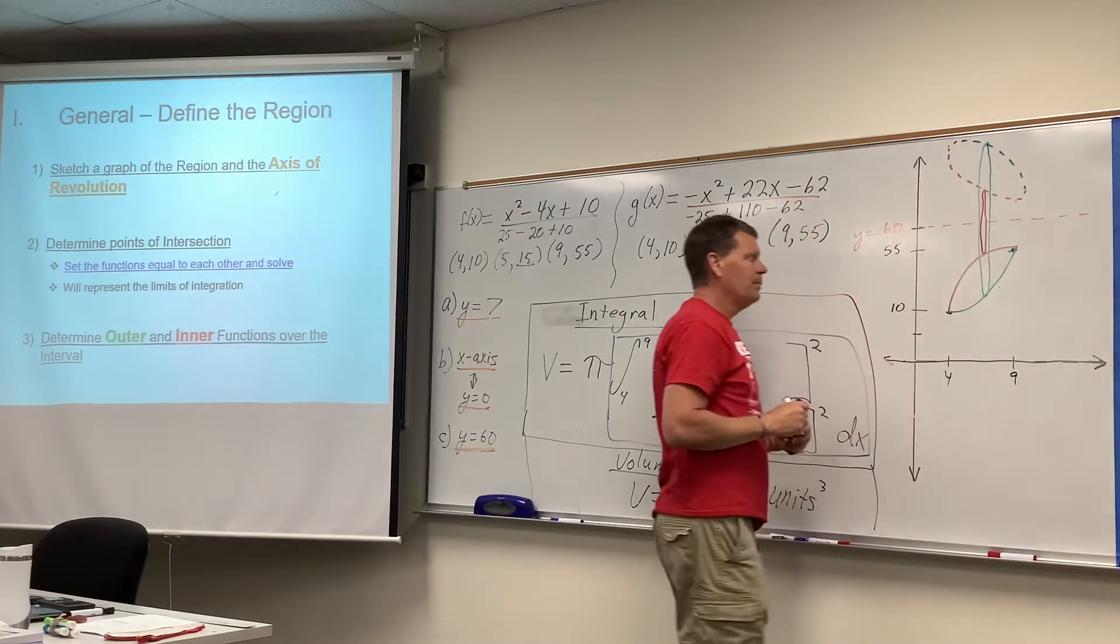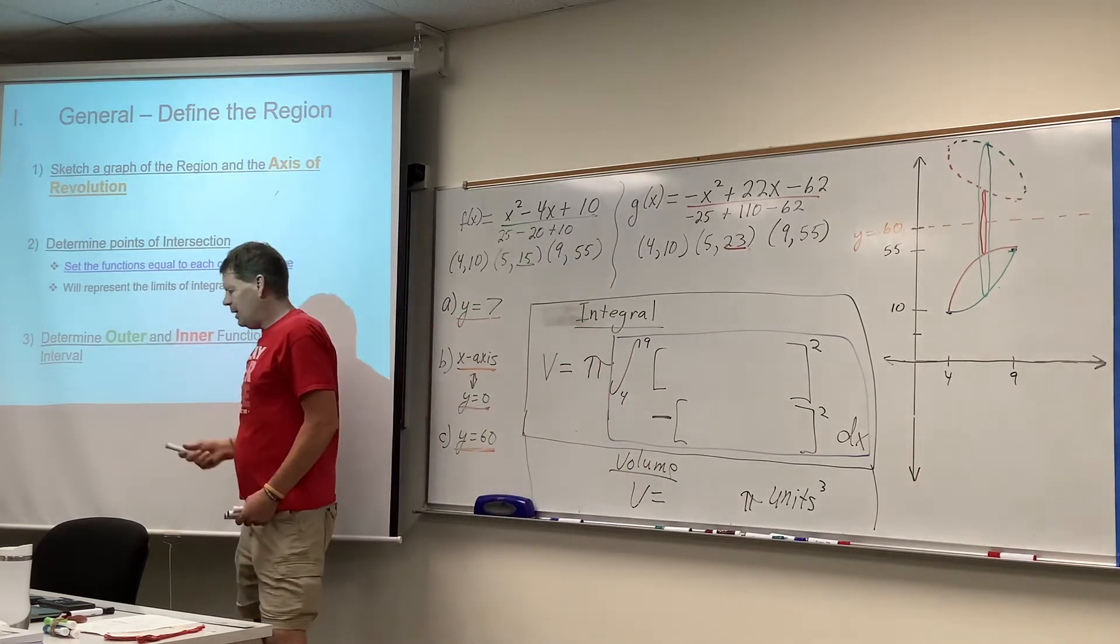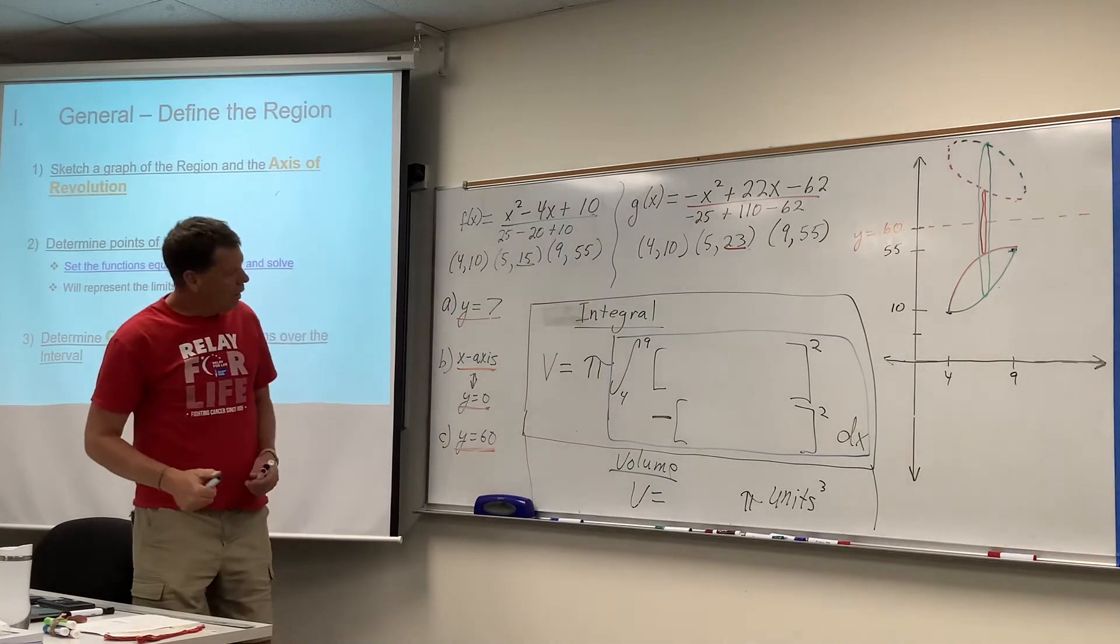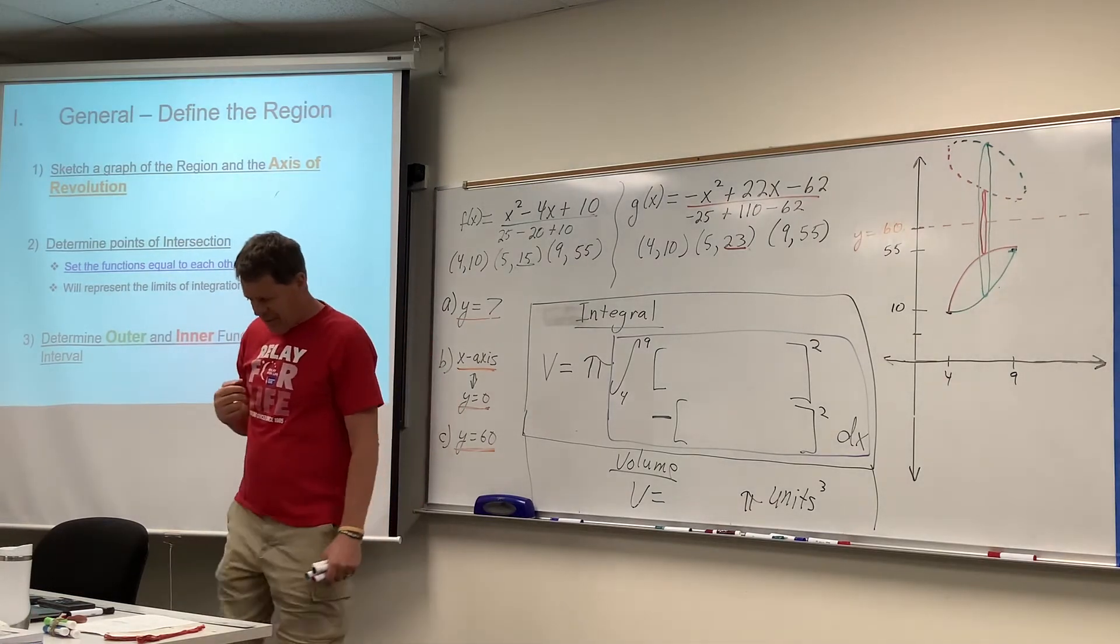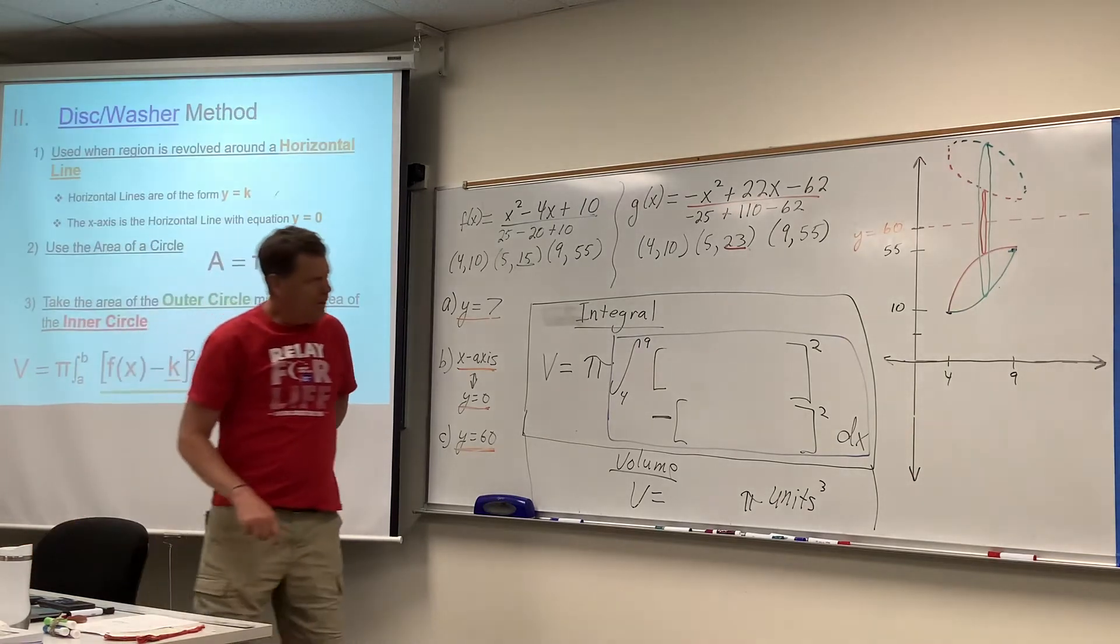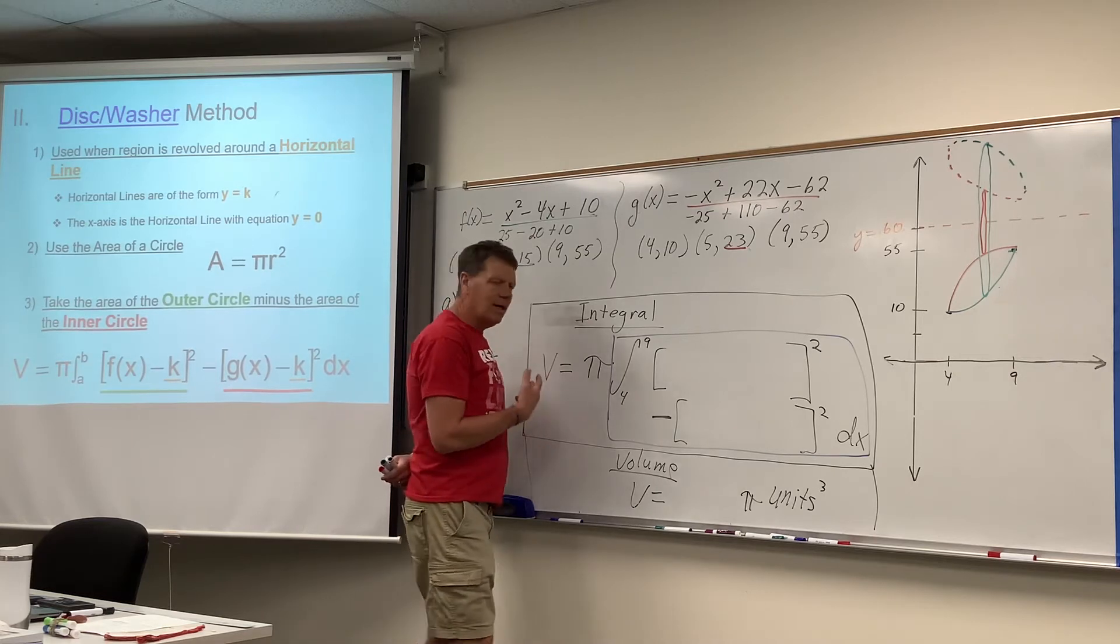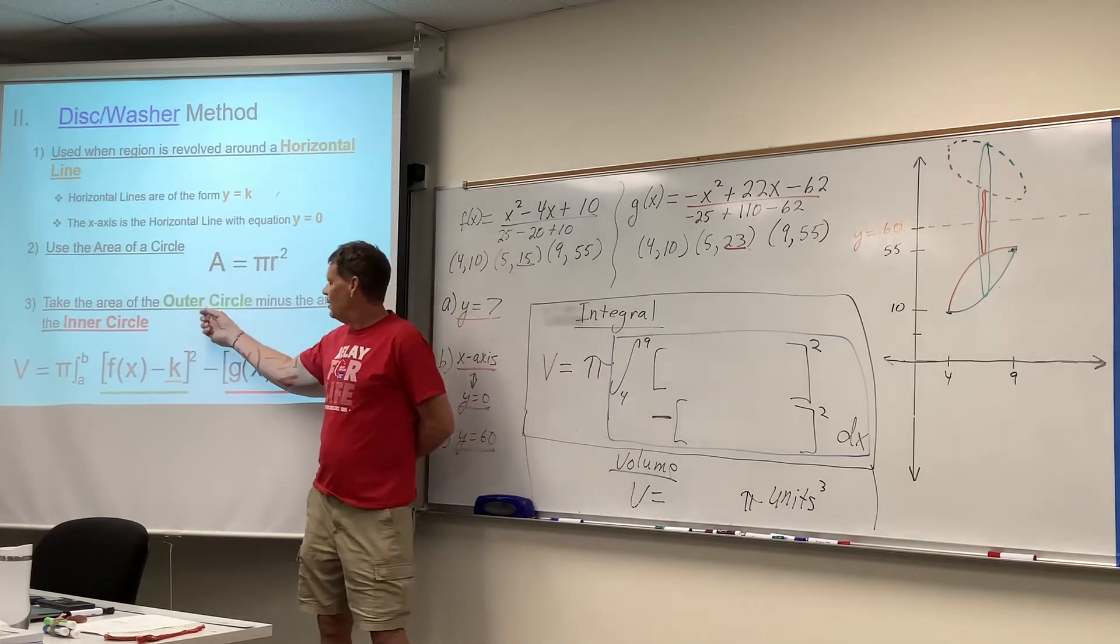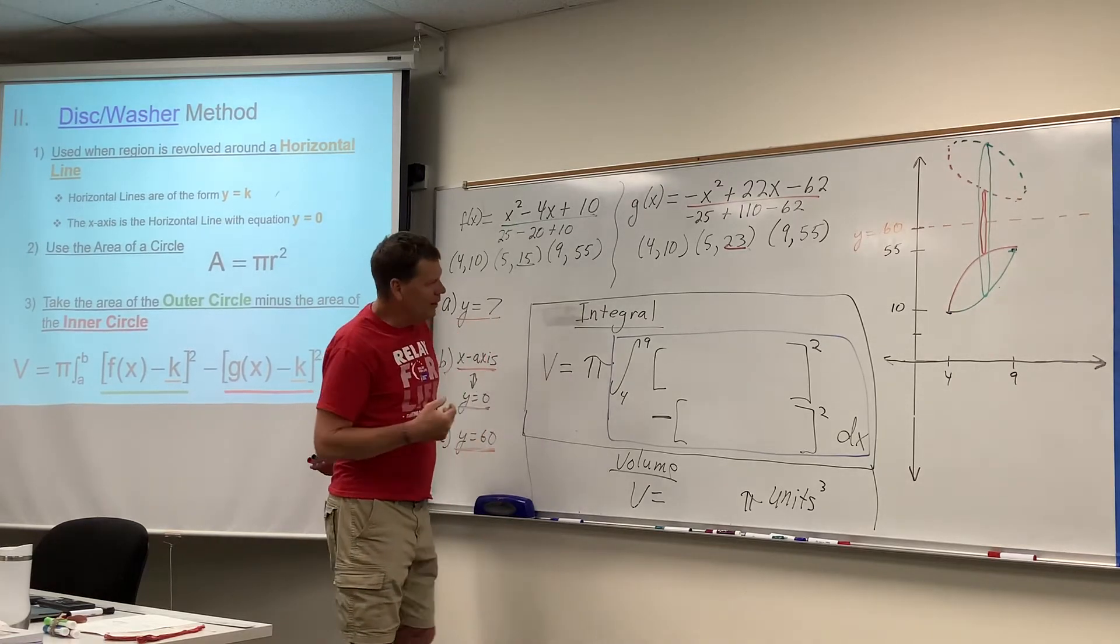Just like before, I'm just trying to be consistent with the green and the red, outer green, inner red. Now, here's another thing that's different about this. What's the formula for the area of a circle? Pi R squared. So again, we're doing the area of the outside green one minus the area of the inside red one.